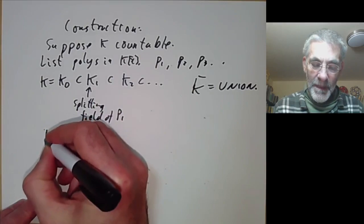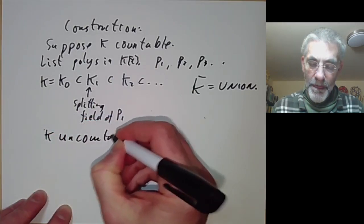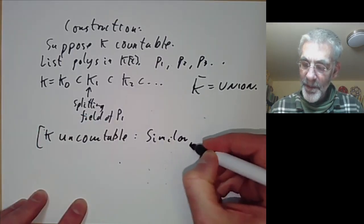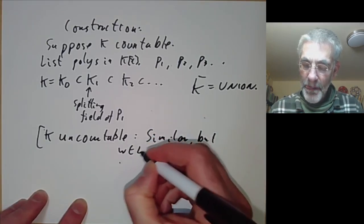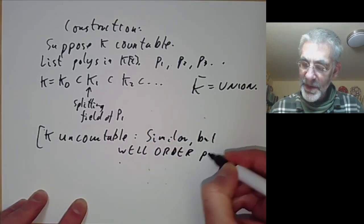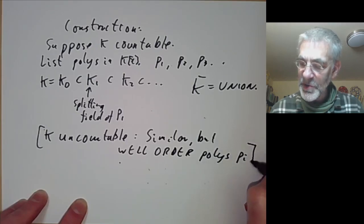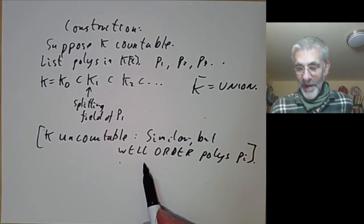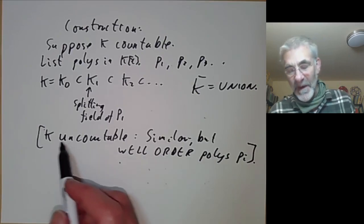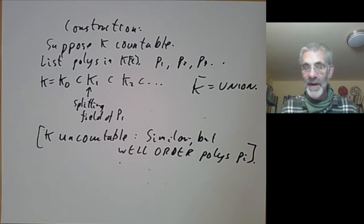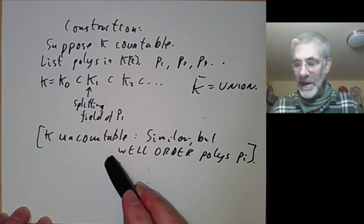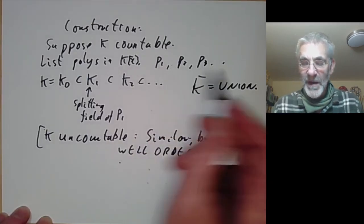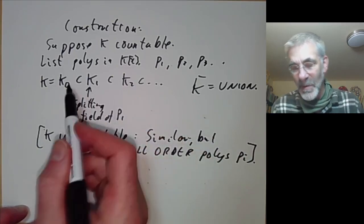What if k is not countable? If k is uncountable, it's similar but we well-order the polynomials p_i using the axiom of choice and then do something similar. If you don't know about well-ordering you probably don't care very much about uncountable fields either, but if you go to a set theory course they'll tell you all about how to well-order things, and if you well-order the polynomials you can copy this proof only you get an uncountable well-ordered chain.